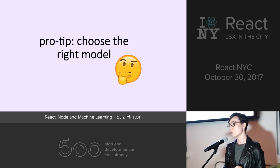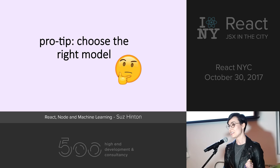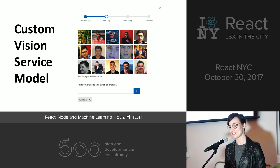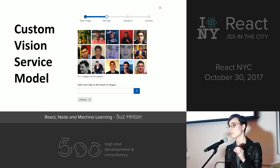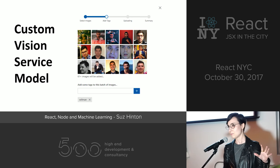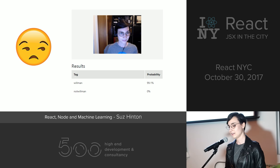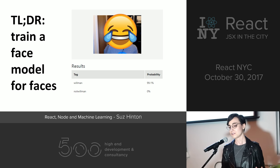My pro tip: if you want to train faces, use the right model. Don't use a generic model that can recognize everything. For example, I tried this with the custom vision service trying to recognize my friend Wilman — I uploaded 61 images of Wilman, tagged every single one, then uploaded a random bunch of images of not Wilman, including myself. Then using the endpoint from that custom model, I passed through a photo of myself, and it said it was 99.1% probable that it's Wilman. That's not Wilman, that's me. So the moral of the story is: train a face model for faces.